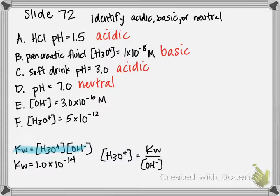So remember, Kw is always equal to 1×10^-14. And if we rearrange this equation to solve for H3O+, it becomes Kw over hydroxide concentration. So therefore, if I'm writing in my numbers, it would be 1×10^-14 over 3×10^-10.